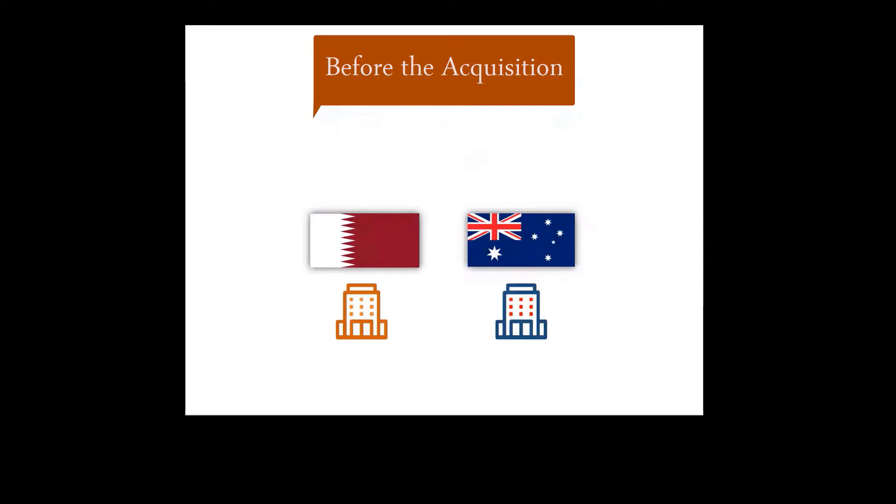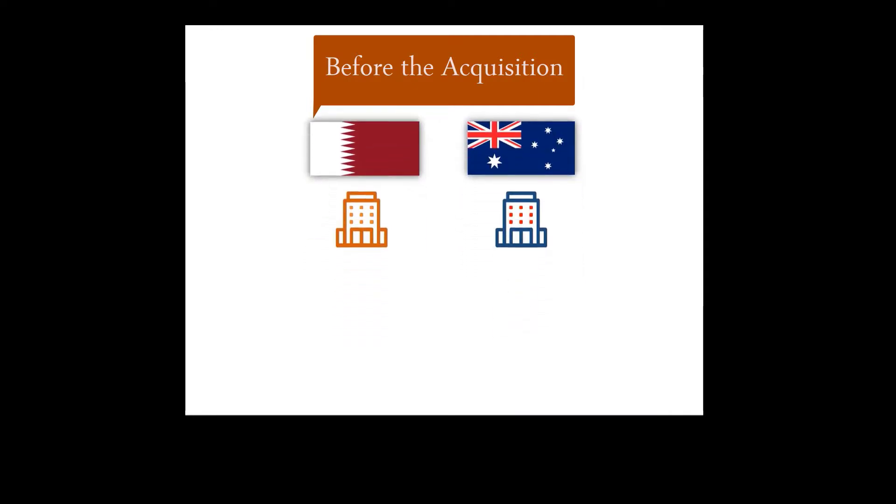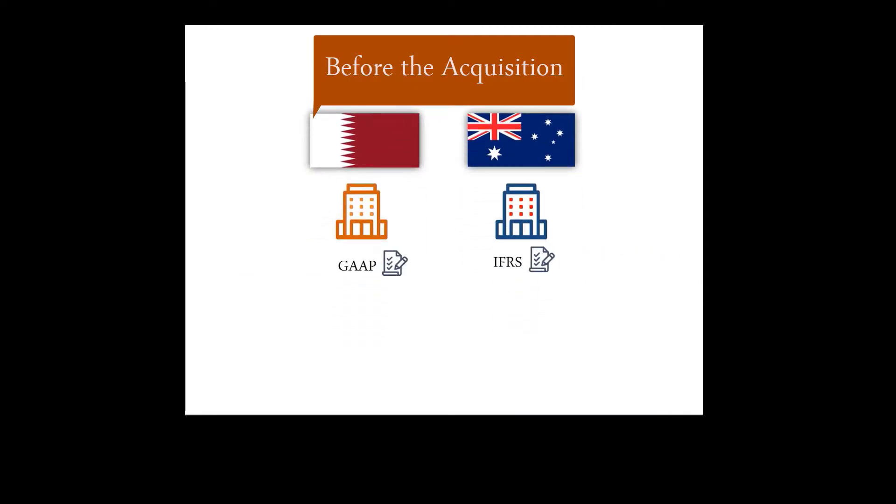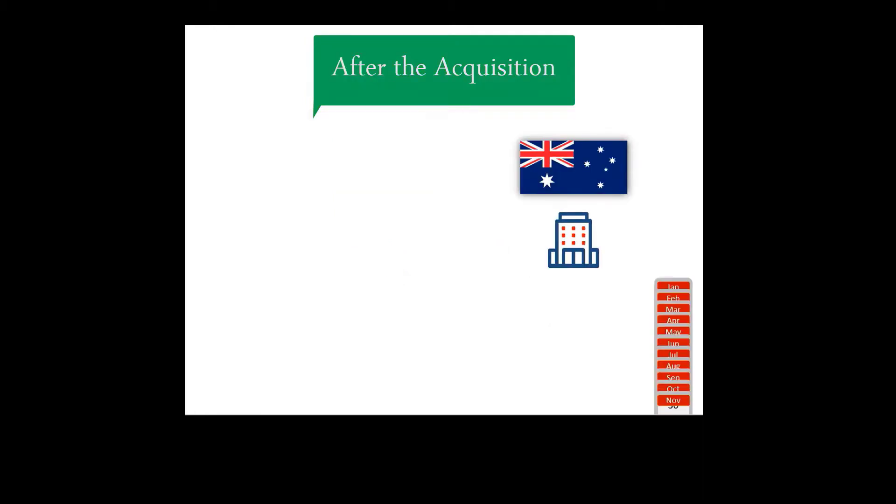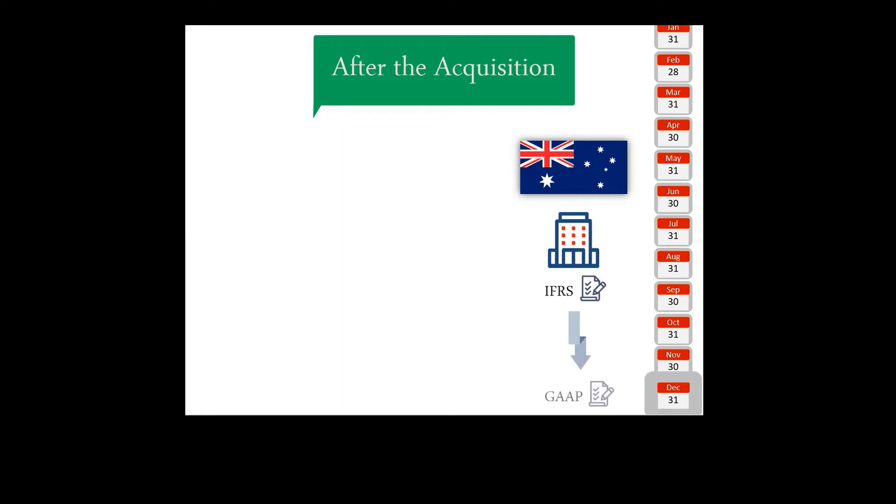Before the acquisition, the two companies used different accounting standards. The acquiring company in Qatar used GAAP while the acquired company in Australia used IFRS. After the acquisition, the Australian company was allowed to use its accounting standard IFRS throughout the financial year. However, at year's end, it had to translate its financial statements based on GAAP so that it sends its information to the acquiring company in Qatar.